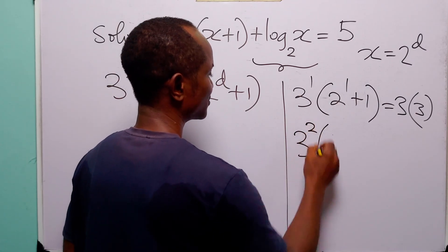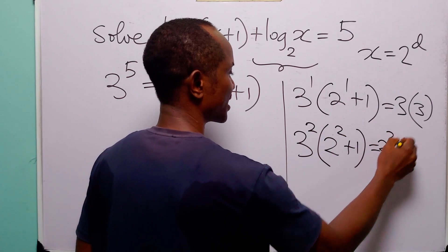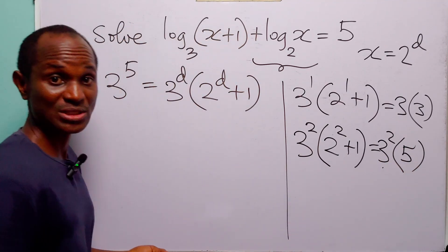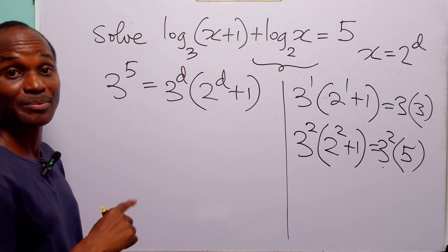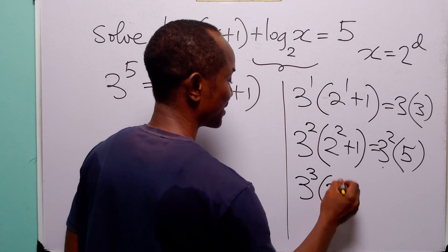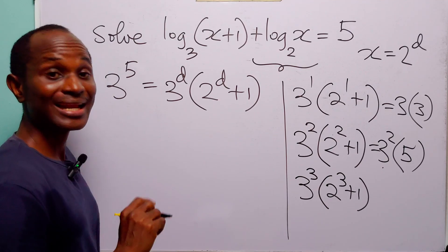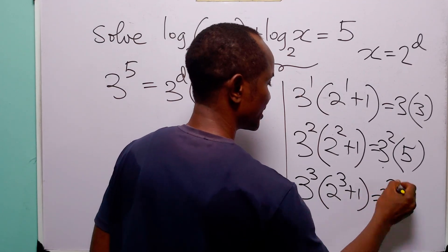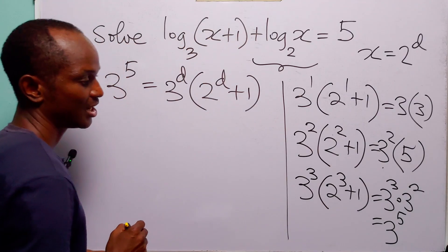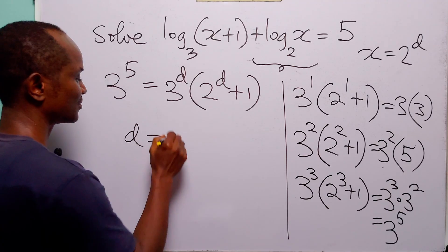When d is equal to 2, we have 3 squared times 2 squared plus 1. This is 9 times 5, which is 45. 45 is not equal to 3 to the power 5. When d is equal to 3, we have 3 cubed multiplied by 2 cubed plus 1. Now, 2 cubed is 8 plus 1 equals 9, which is 3 squared. So this equals 3 cubed multiplied by 3 squared, which is 3 to the power 3 plus 2, equals 3 to the power 5. So the value of d that satisfies this equation is d equal to 3.